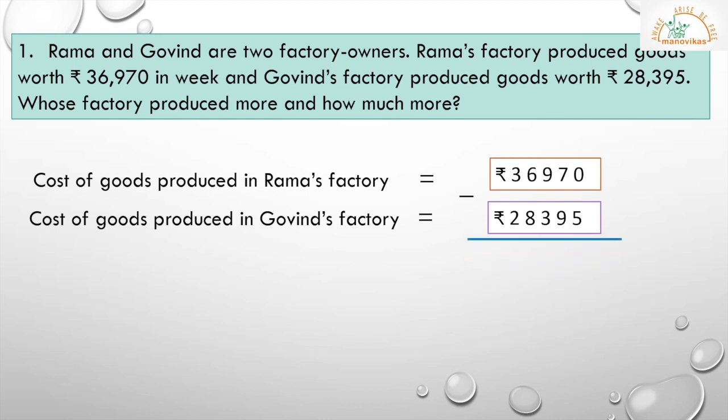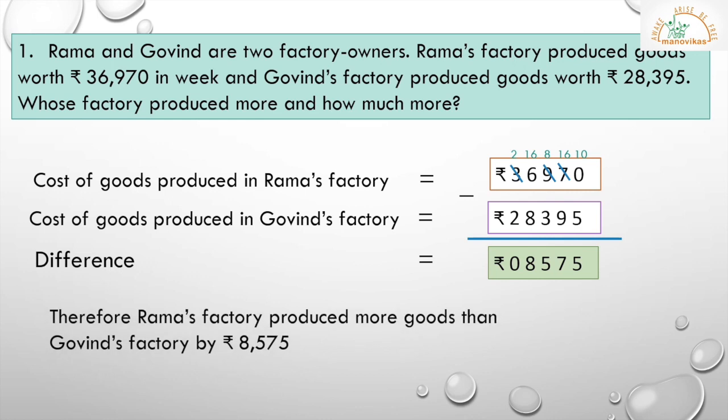We have to do the subtraction here. Regroup the places. So, 10 minus 5 is 5. 16 minus 9 is 7. 8 minus 3 is 5. 16 minus 8 is 8. 2 minus 2 is 0. This is the difference we got. Therefore, Rama's factory produced more goods than Govind's factory by Rs. 8,575.